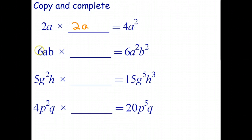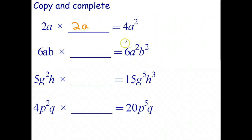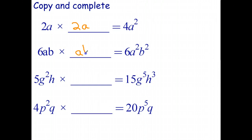Next: 6 is the coefficient times what gives 6? The answer is 1, which we don't write. Then a times what gives a²? That's a×a. And b times what gives b²? That's b. As a check: 6 is a factor, a×a gives a², and b×b gives b².